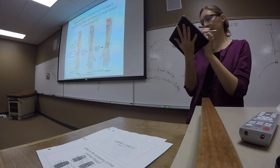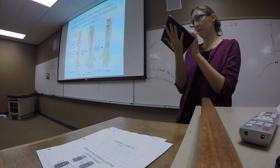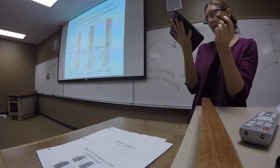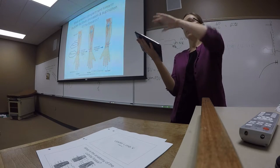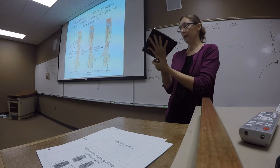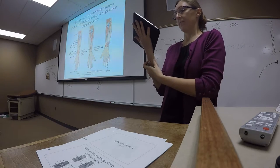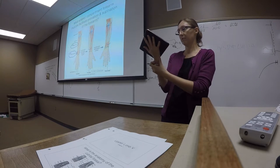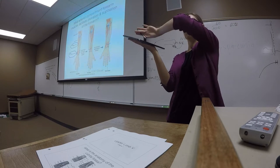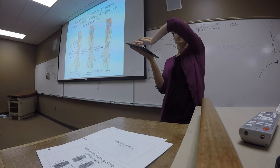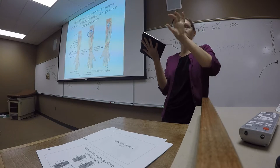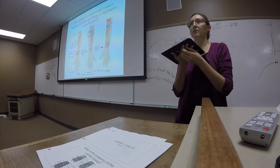When the pronator quadratus contracts — it's wrapped over the anterior surface of the bones — it pulls the radius over the ulna and causes it to rotate, because its insertion is on the lateral part of the radius and its origin is on the medial part of the ulna. So as it pulls, it not only pulls the radial bone over the ulna, it actually causes it to rotate. The nature of the radial head and the annular ligament allows for that radial head to rotate in its socket easily.